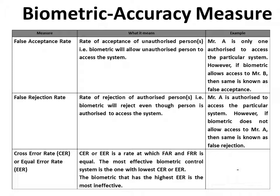The Cross Error Rate is the rate at which false acceptance and false rejection are equal. The most effective biometric control system is the one with the lowest CER or EER. The biometric with the highest EER is the most ineffective.